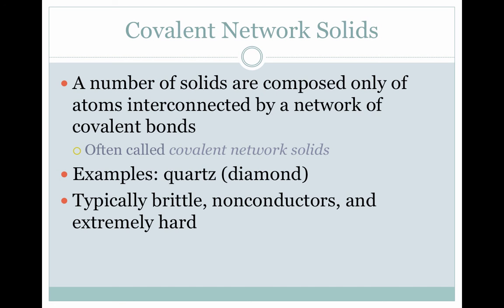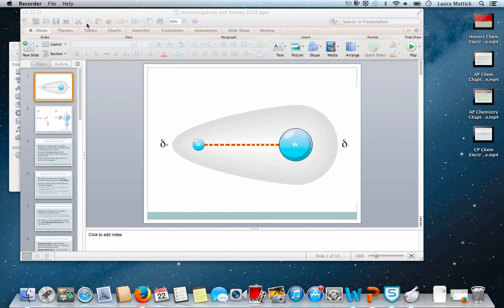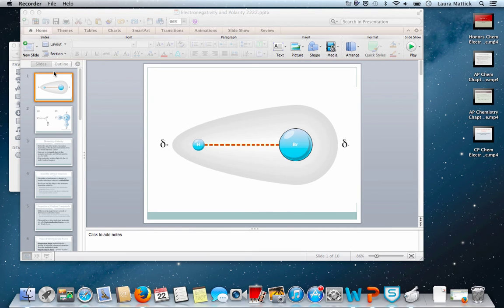A number of solids are composed of only atoms interconnected by a network — these are called covalent network solids. An example would be diamond. These are brittle but not conductive, which differentiates them from ionic compounds, and they're extremely hard. That is the end of the material. We're going to finish up the PowerPoint we didn't finish in class, and that material will be on the quiz tomorrow.